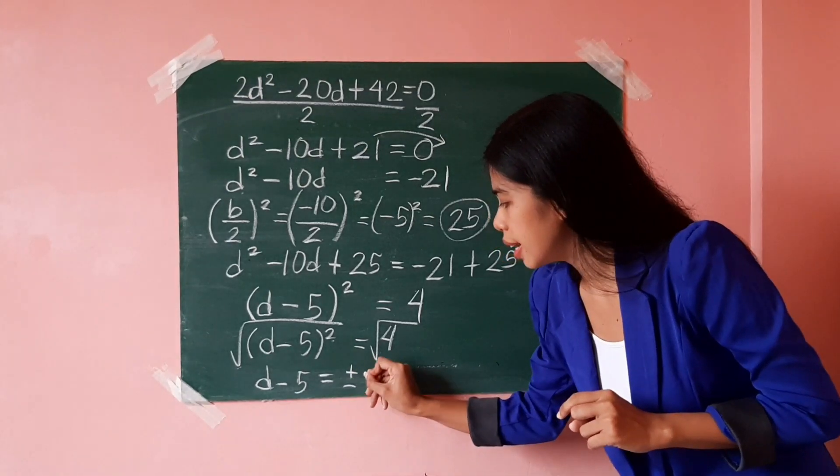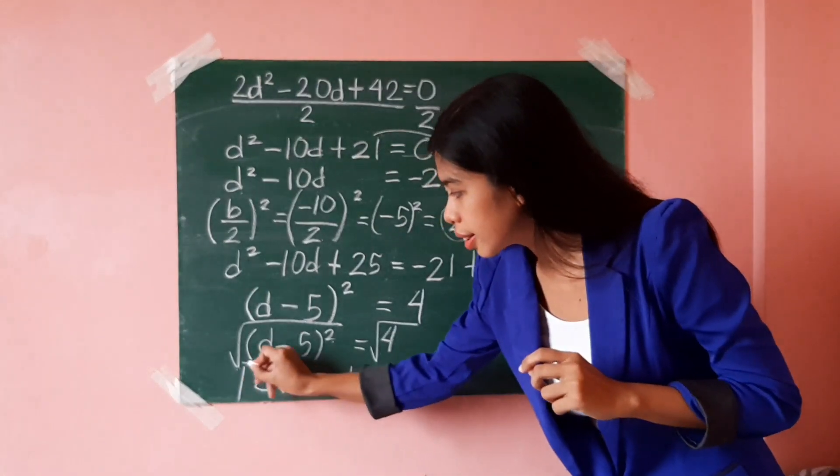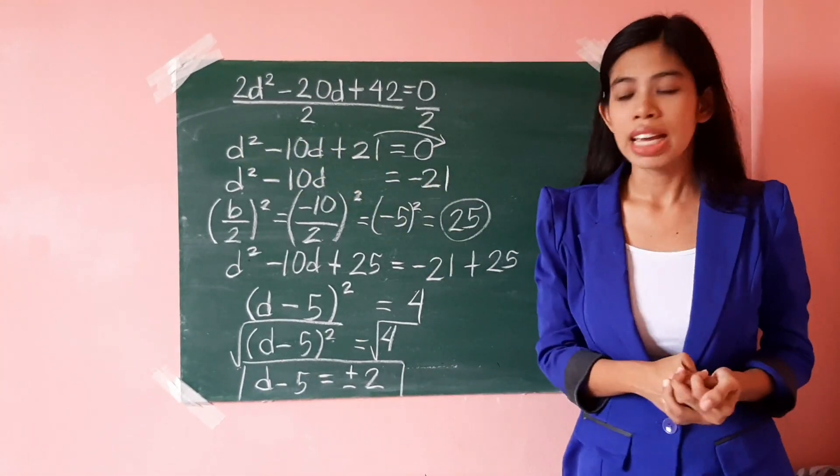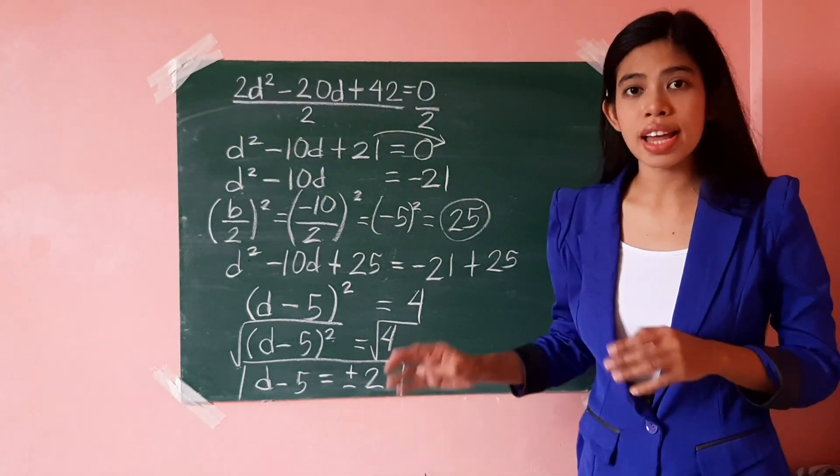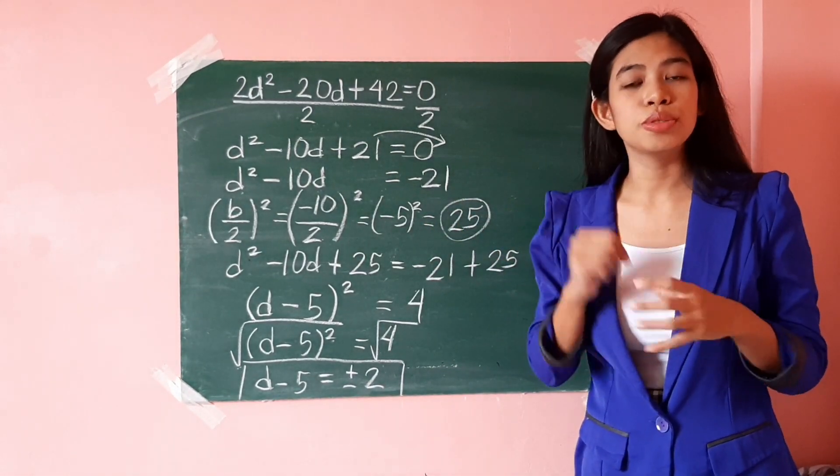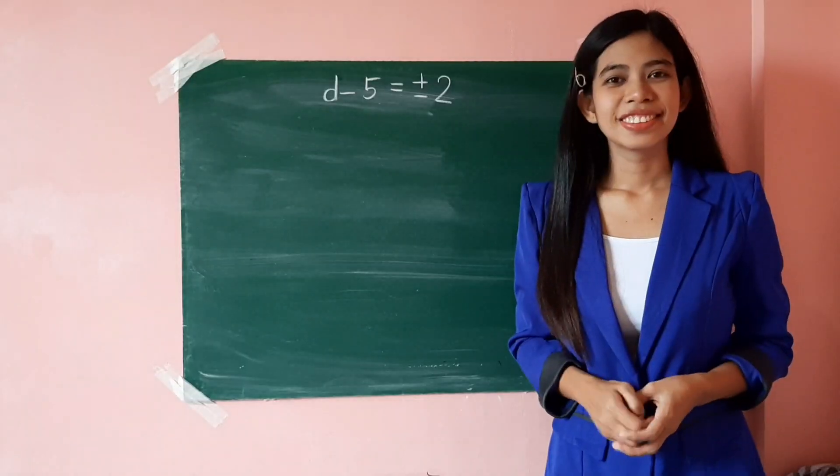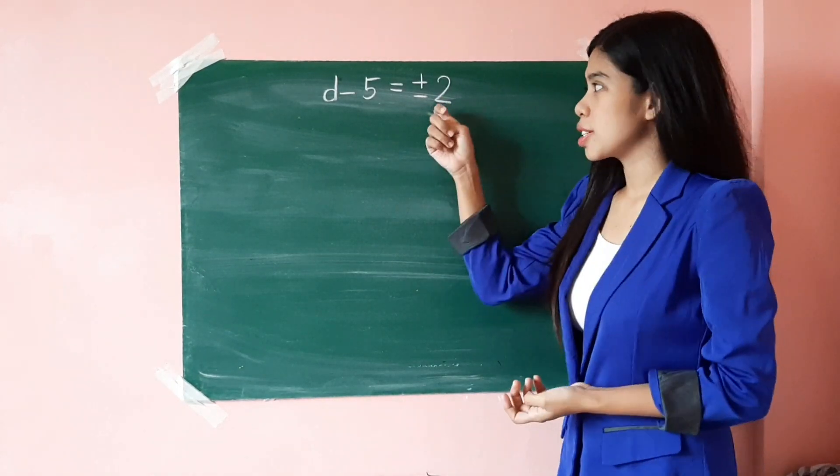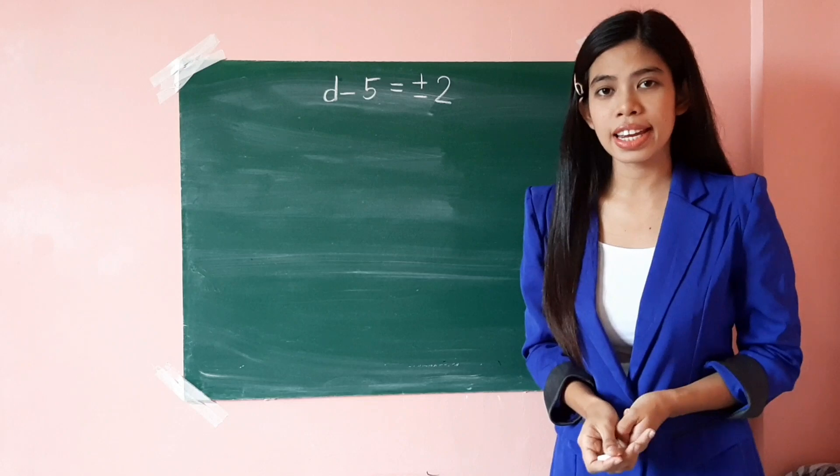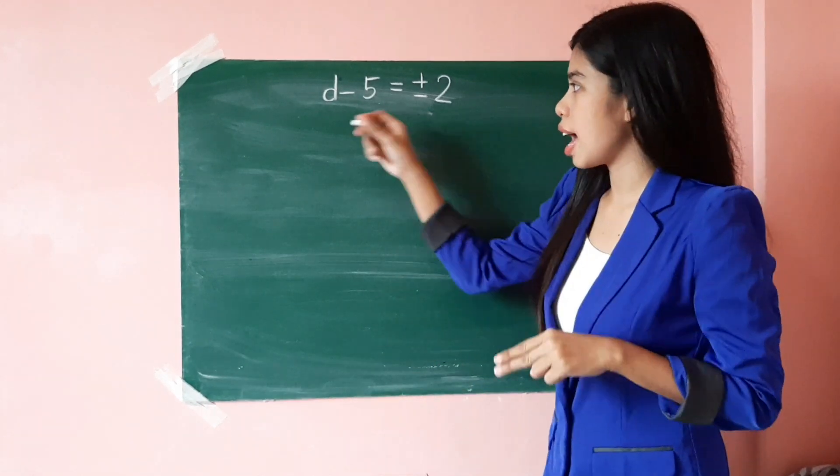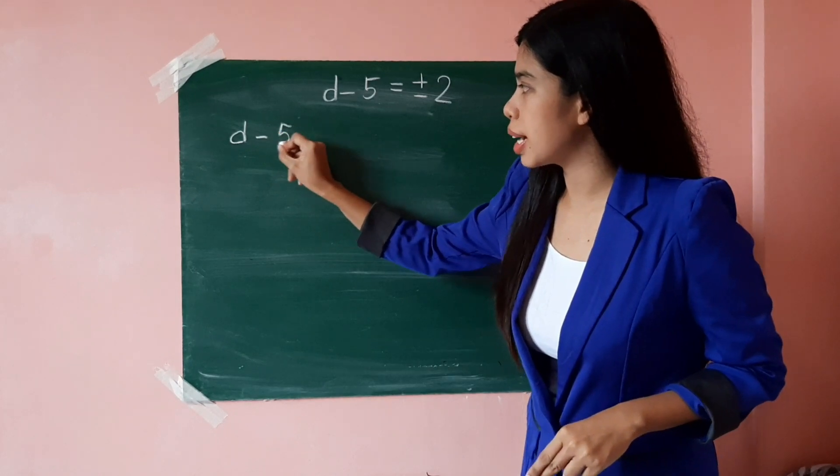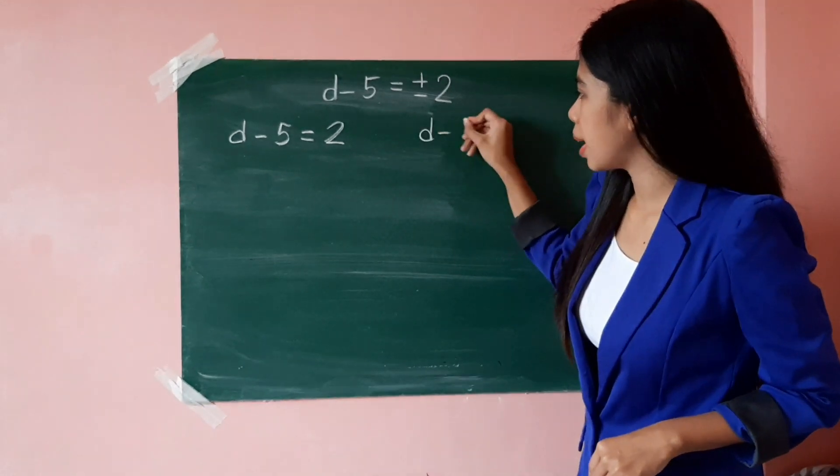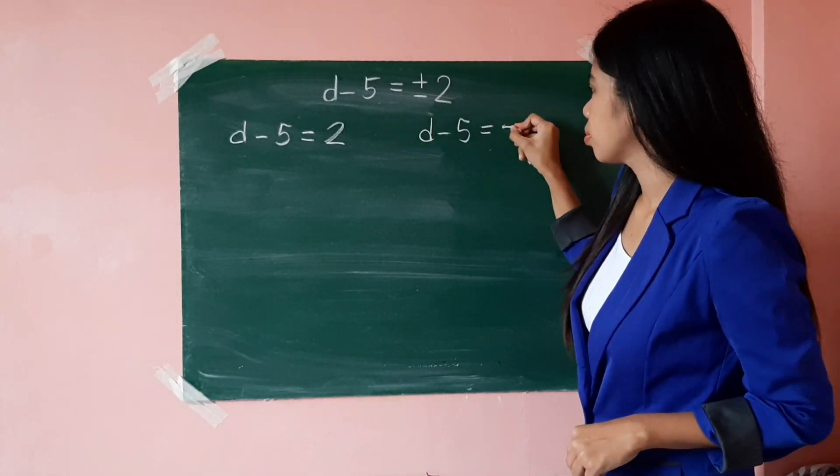So, this is not yet the final answer because we are after the two values of d. And since this is positive negative 2, we just have to separate it so that we can find two values of d. So once again, we came up with d minus 5 equals positive negative 2. For us to get two values of d, we just have to equate the first one, d minus 5, with positive 2. And the other one, d minus 5 is equal to negative 2.